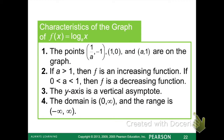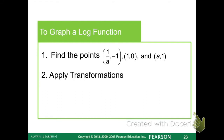Here's a quick summary of the characteristics: all log functions go through those three points. Later on, we'll see some transformations and we'll just take those points and transform them as necessary. If a is greater than 1, the function is increasing. If a is between 0 and 1, we're decreasing. The y-axis is our vertical asymptote unless a transformation has moved it. Domain is 0 to infinity and range is negative infinity to infinity. To graph log functions, find the three points and apply any transformations. Note that a is just the base of the log.